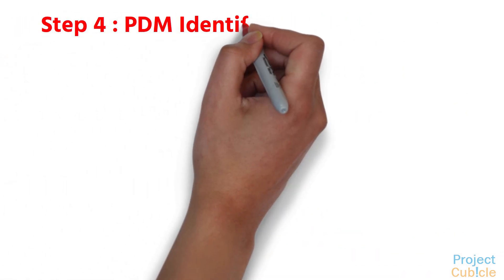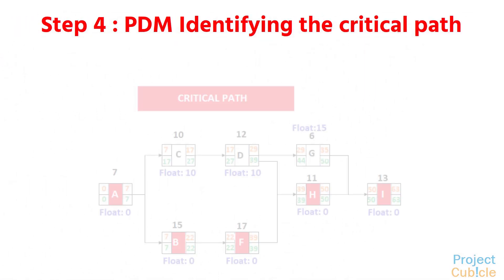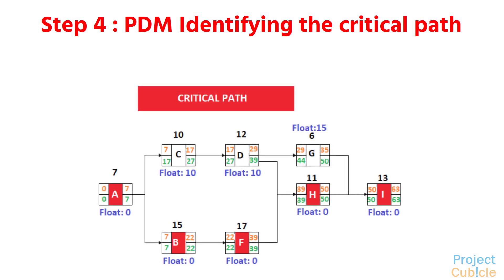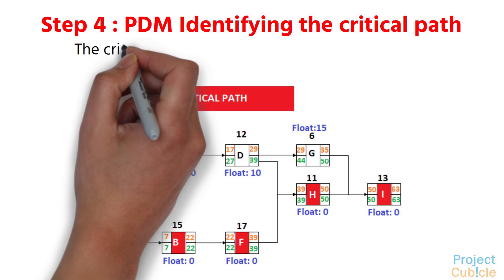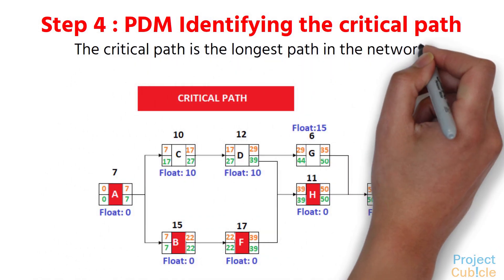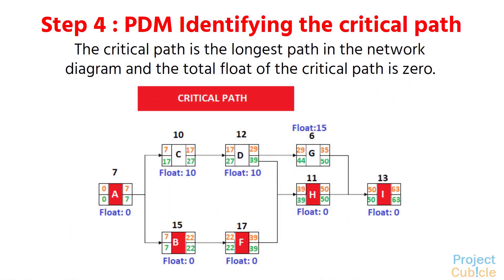Step 4: PDM Identifying the Critical Path. When we analyze the network diagram, we will see that there are some paths and every path has a duration. The critical path is the longest path in the network diagram, and the total float of the critical path is zero.